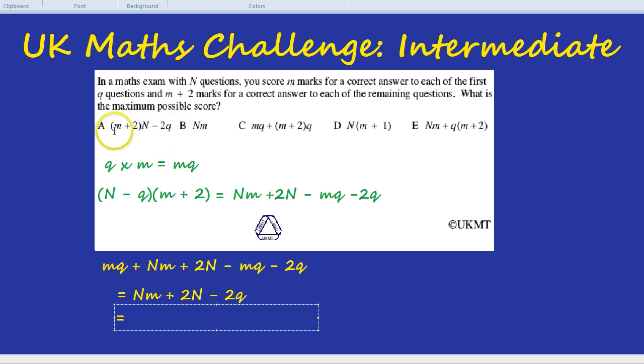If you notice times the M and the N you get MN, times the 2 and the N you get 2N, and you get take away 2Q. But just so we can write it as they did, we'd have an N and then inside M plus 2 and take away 2Q.